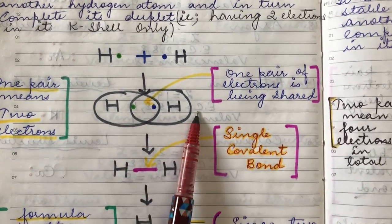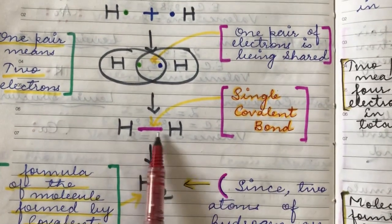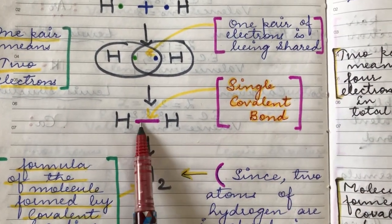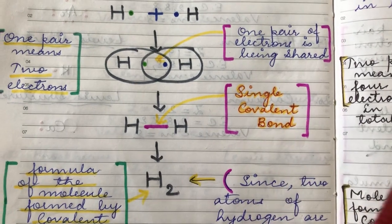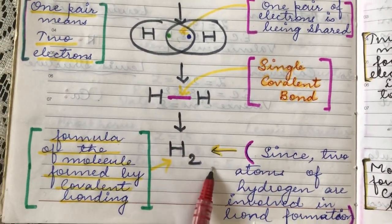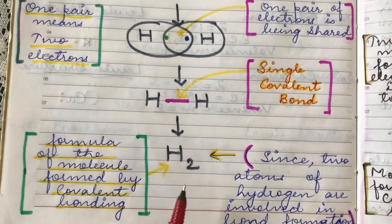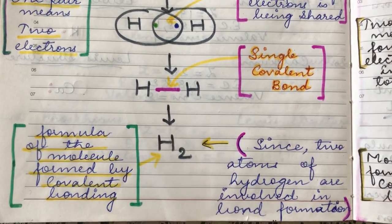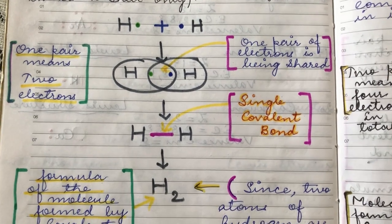Each hydrogen atom shares one electron, so together they share one pair of electrons. This one shared pair is represented by a single line between the two hydrogen atoms, which represents a single covalent bond — meaning two atoms are sharing one pair of electrons. Since two hydrogen atoms are involved, the formula is H₂, written with a subscript 2, representing the hydrogen molecule formed by covalent bonding.